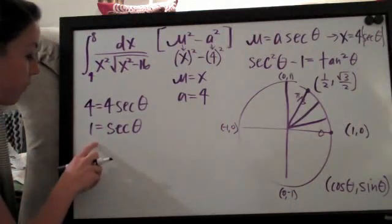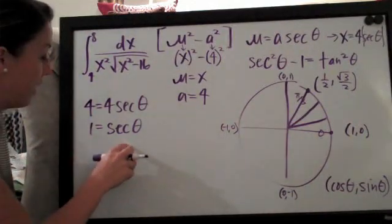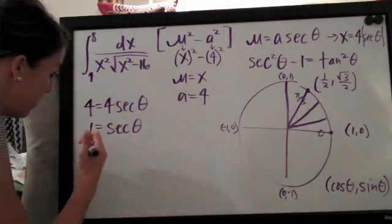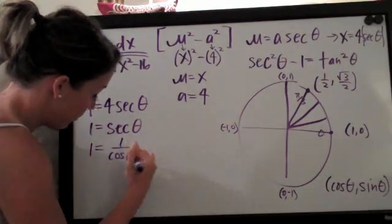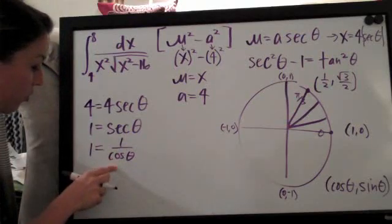So the way that we do this, secant is the same thing as one over cosine, so we can convert this to be one over cosine theta. These two are equivalent here.